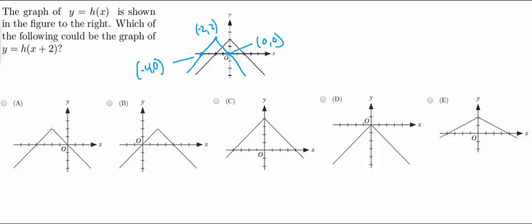So negative 2, 2, done. 0, 0, and negative 4, 0. So this looks like this here is going to be our answer. We can check the rest of them, but this is shifted 2 in the wrong direction. This one is shifted up 2. This one looks like it was shifted down 2. And this one looks like the wings were just pulled out by 2 each.